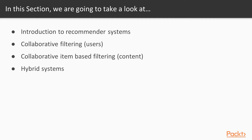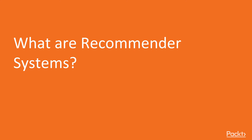Recommendation systems — in this section we're going to look at what is a recommendation system and the different types. Collaborative filtering is the first one: in this approach we look at similarity between users to recommend something to a specific user. Item-based filtering is the second one, focusing on similarity of items rather than users. Finally, the hybrid system is a combination of the two.